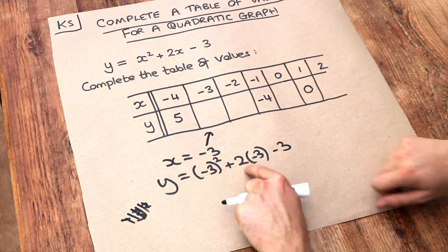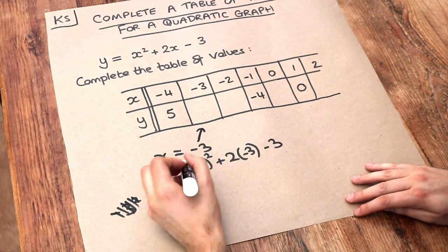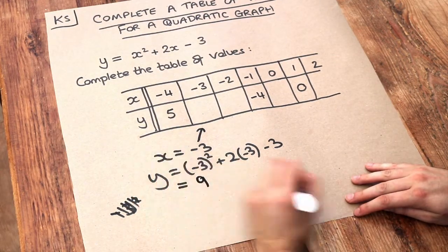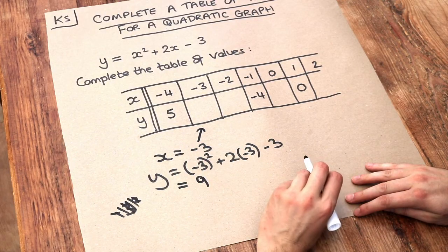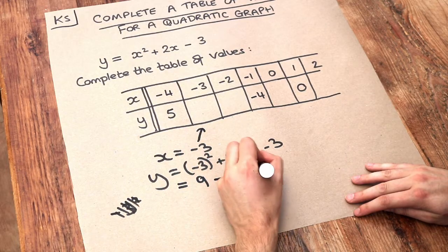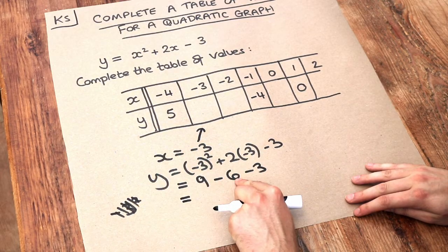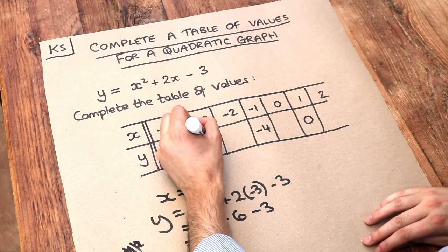This bracket means 2 times minus 3. So minus 3 squared is positive 9 because negative times negative is positive. 2 times minus 3 is minus 6. We're adding minus 6, which is subtracting 6. That's 9 minus 6, which is 3, minus 3 equals 0. So we put 0 here.